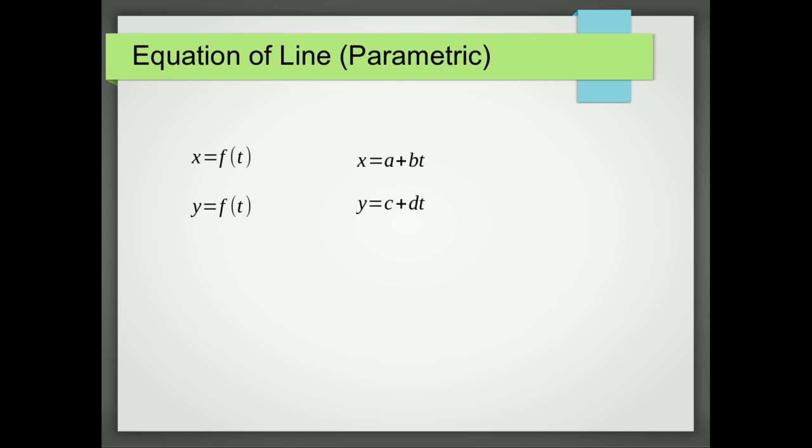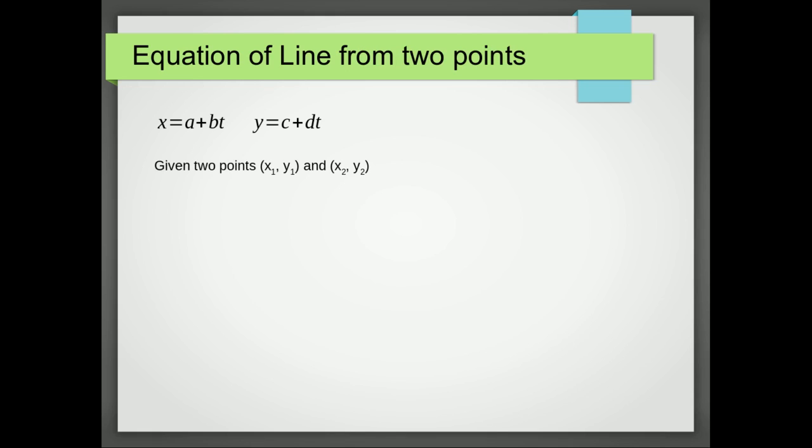If we want to find the equation of a line from two points, what is quite nice is if we've got those points (x₁, y₁) and (x₂, y₂), the function of t of x is just given by x₁ plus the difference of the x coordinates times t. And the y function is similar.